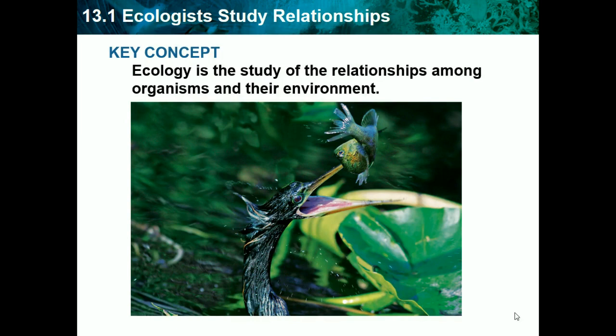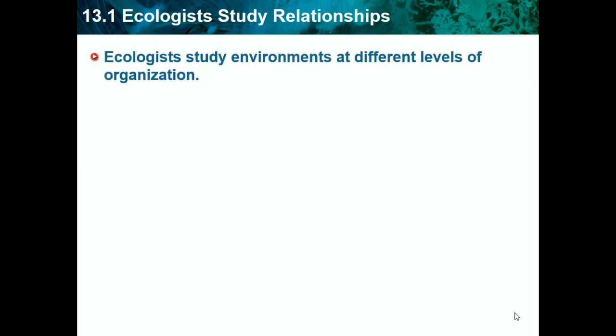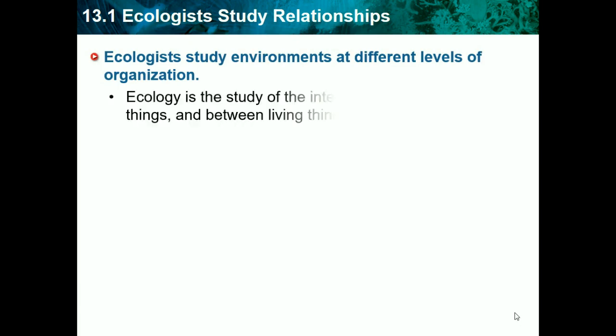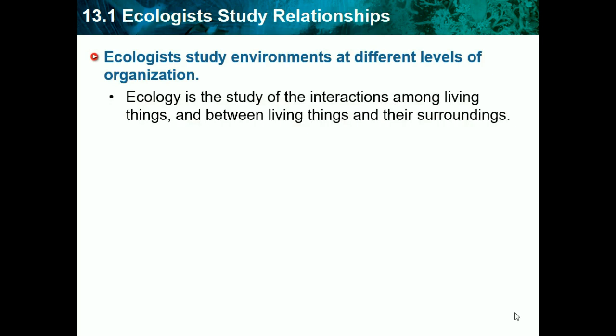Ecology is the study of relationships among organisms and their environment. As we know, everything interacts with at least one other thing, so ecology is basically the study of how things interact. Ecologists study environments at different levels of organization — there are different subunits in an ecosystem that ecologists study and categorize. Ecology is the study of interactions among living things and between living things and their surroundings.